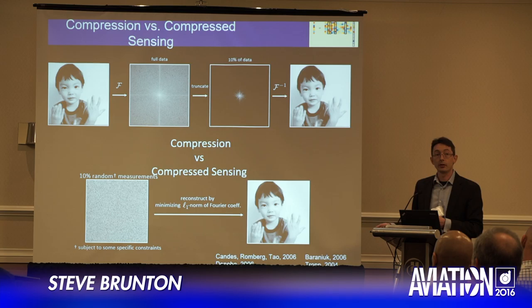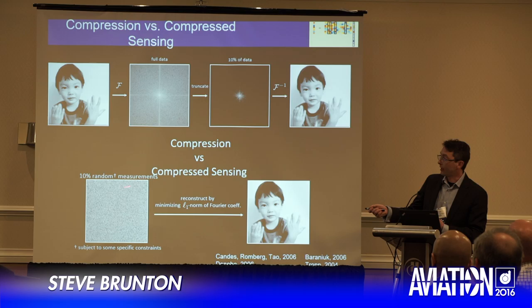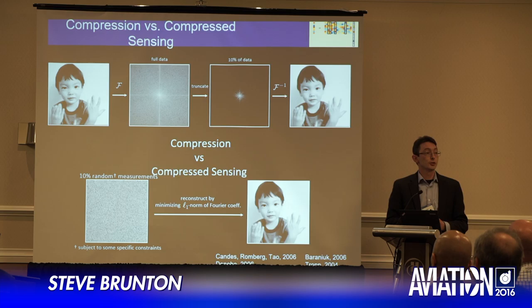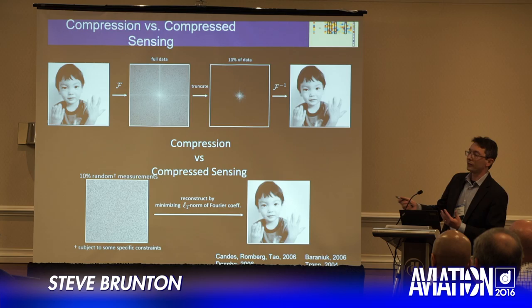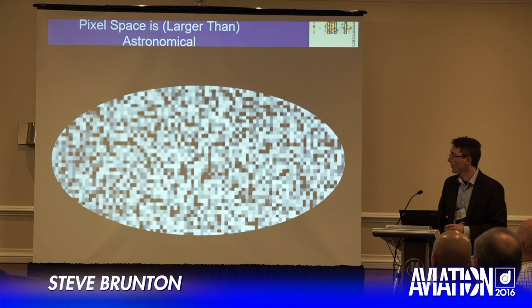This is a lot easier said than done, and it's only because of remarkable advances in applied math and statistics in the last ten or so years that it's actually possible. We know signals are sparse in an appropriate basis, we can get away with a surprisingly small amount of random measurements, and then infer what the large non-zero Fourier coefficients are. I'll use image examples to start because they're intuitive, but you can think of the same thing with your data of interest — whether it's a flow field, a time series of a hotwire measurement, or whatever — it's low dimensional in some transformed space.